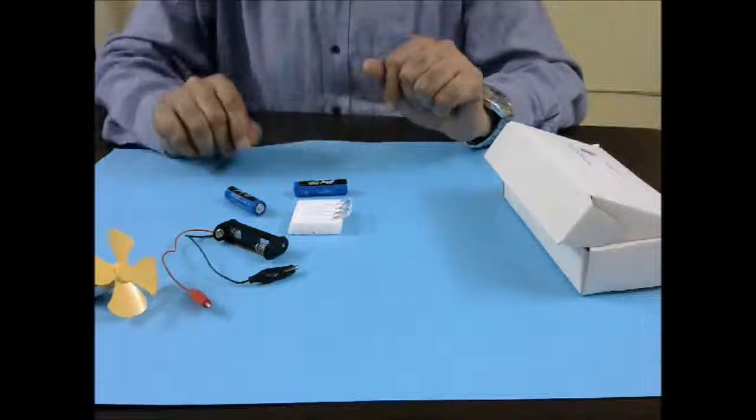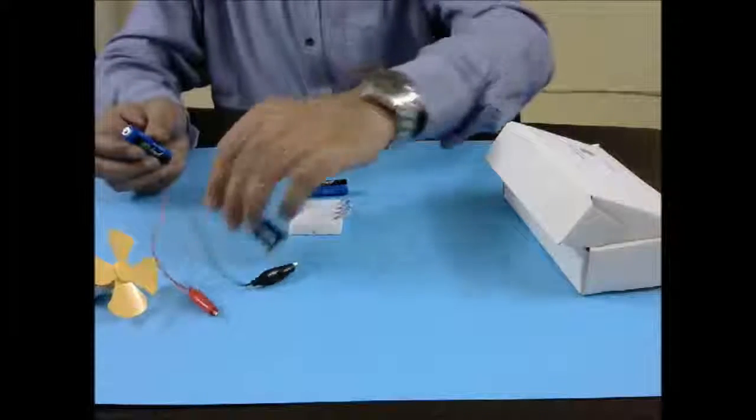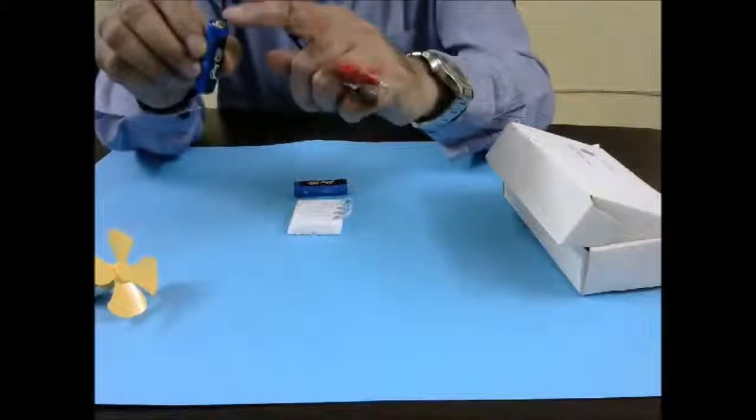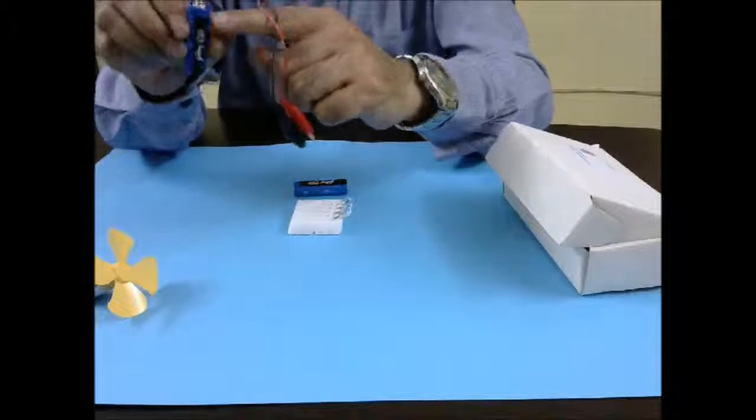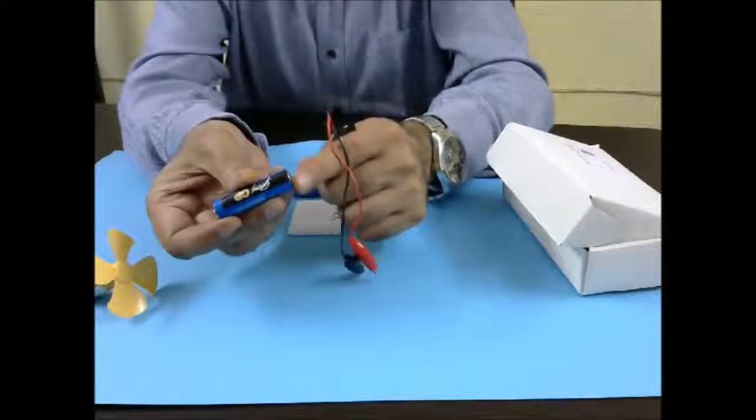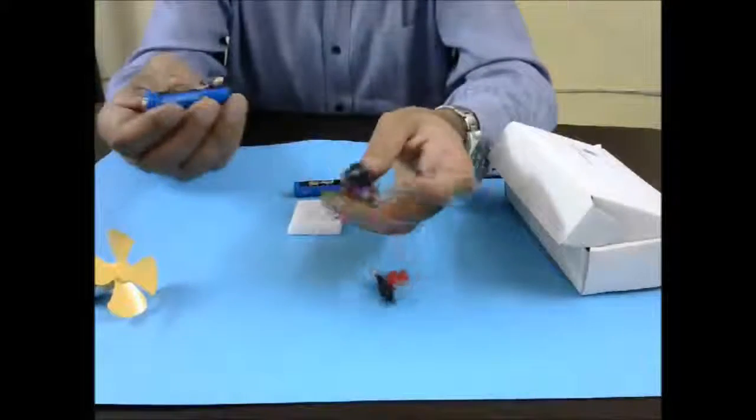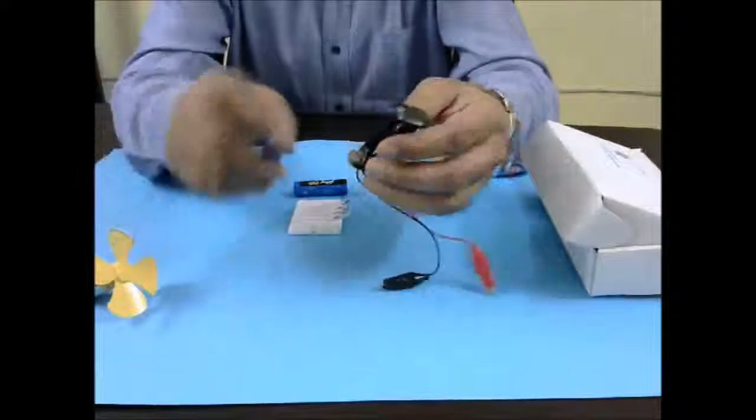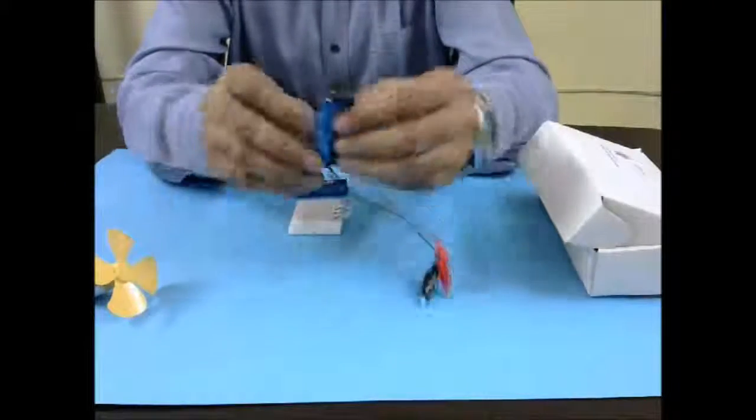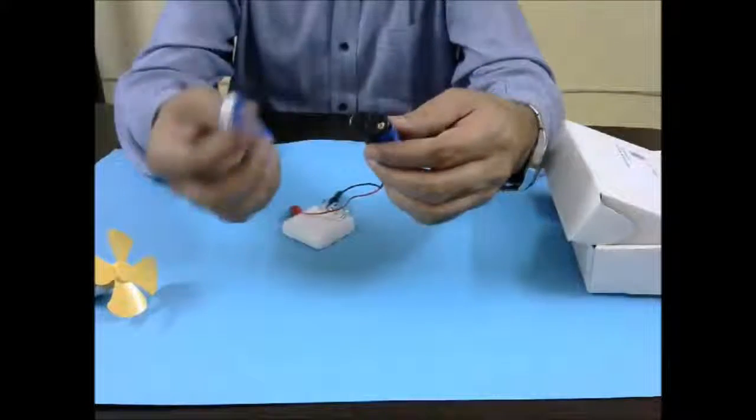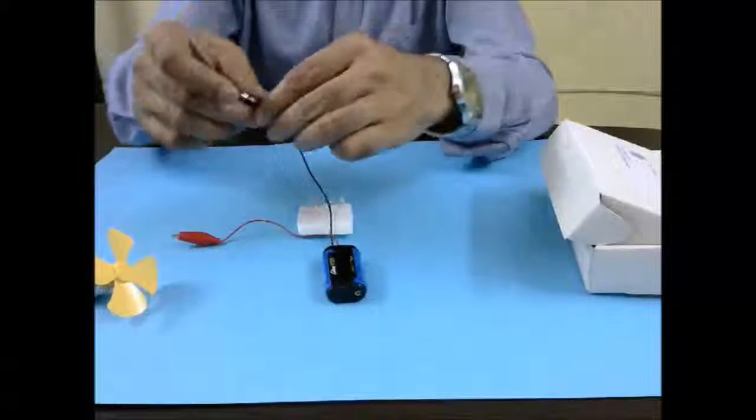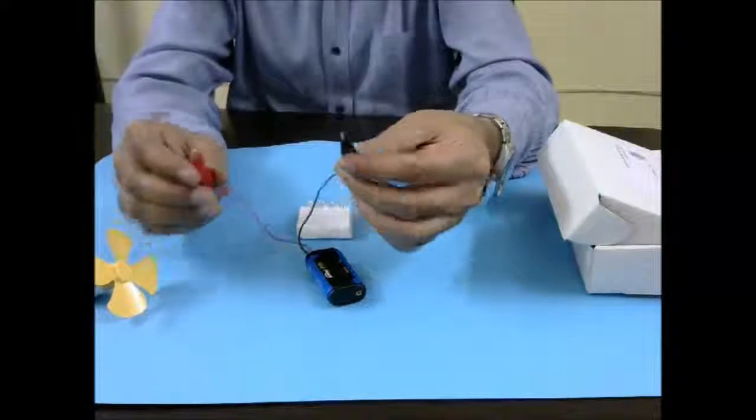So we will start with connecting the battery to the holder. You see the battery has a positive side which is a small tip coming out from here and the negative side which is the flat side. We should always connect the negative side of the battery to this spring in the connector and it fits in here like this. Similarly the other battery goes in the connector and now you have two batteries or cells connected here.